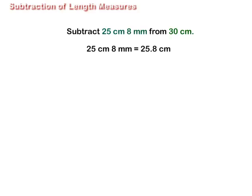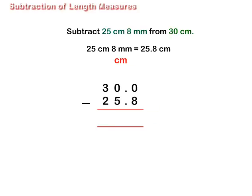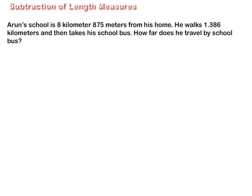Then arrange the numbers in column with the greater number above the smaller number. Decompose and subtract the numbers. We get the difference equal to 4.2 cm. Let us take another example.